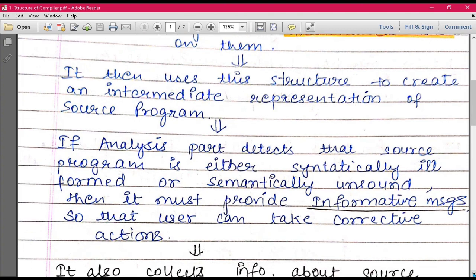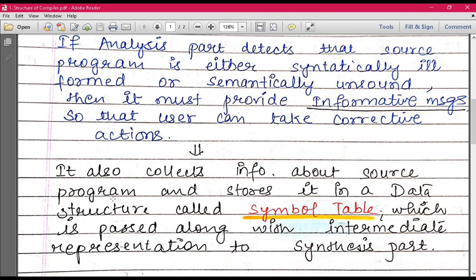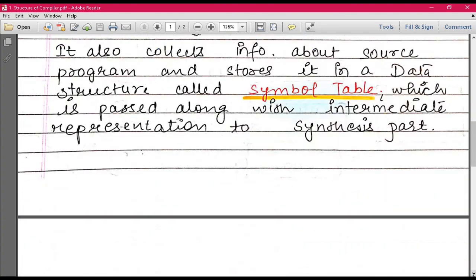It also collects information about source program and stores it in a data structure. You also know that, let's say if you are declaring some new variables, int x, y, z. So these new variables, information will be stored in your data structure. And what kind of data structure? Symbol table. So in symbol table, whatever your code has no information, you will store in your data structure, symbol table. And if there is a value of that variable, we will store it. But the already existing keywords in your particular language will be stored in your data structure. So there is no need to store it.